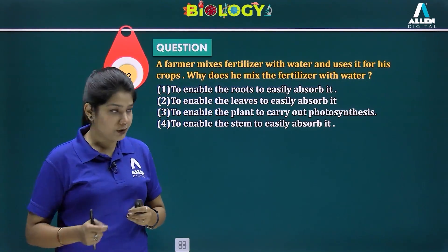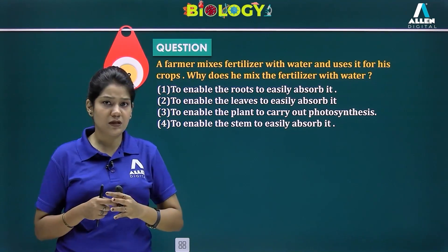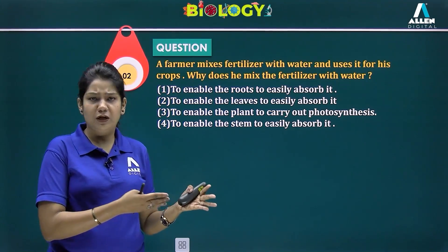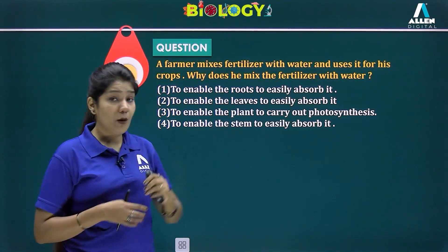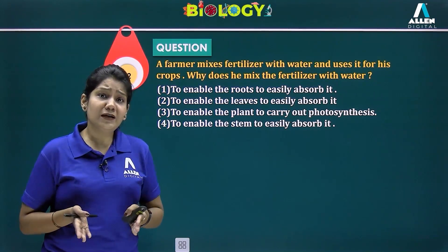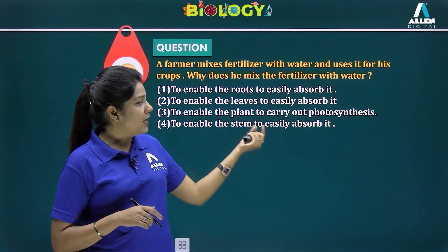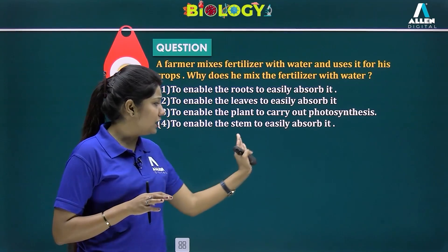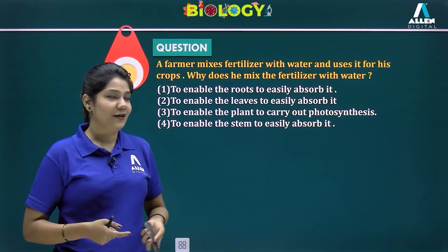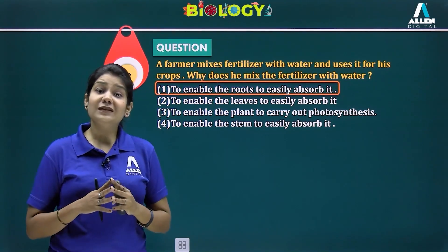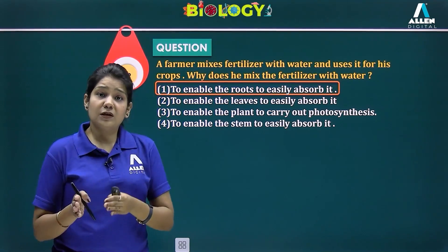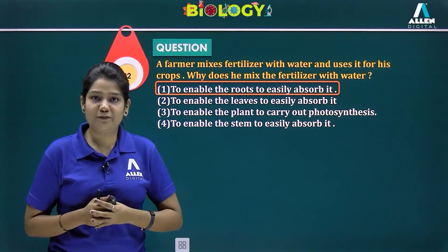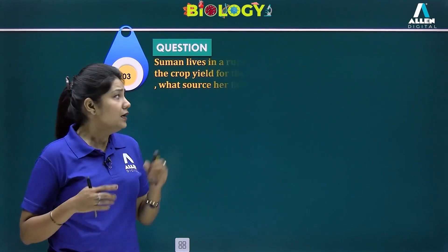The second question: a farmer mixes fertilizer with water and uses it for his crop — why? Fertilizers are found in powdered form and are very soluble in water. The correct answer is to enable the roots to easily absorb it, since roots have root hairs that are in direct contact with the soil, making it viable for them to absorb the dissolved fertilizer.